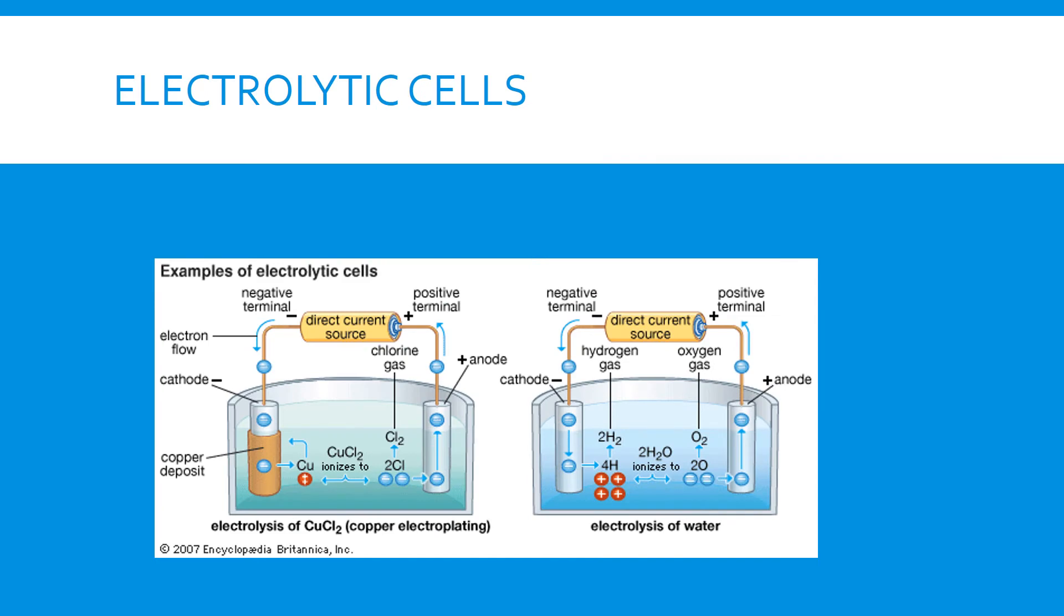For electrolytic cells, we have basically one container and we have our anode. In this case, our anode is positive, but our electrons are still flowing from anode to cathode. Reduction still occurs at the cathode and oxidation still occurs at the anode.